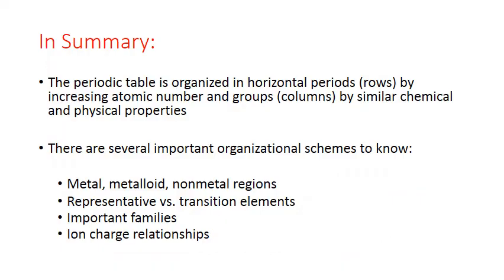In summary, the periodic table is organized in horizontal periods or rows by increasing atomic number, and groups or columns by similar chemical and physical properties. There are several important organizational schemes for you to know. The regions of the periodic table that correspond to metals, metalloids, and nonmetals. Representative versus transition elements. The important families on the table, and ion-charge relationships.